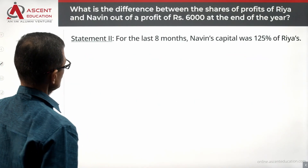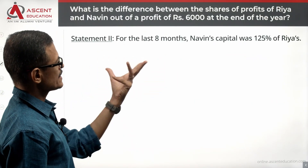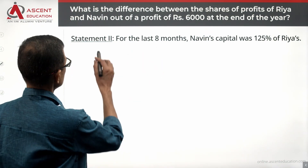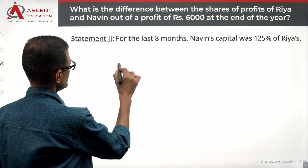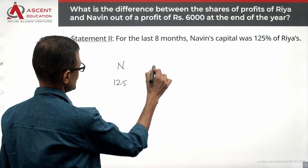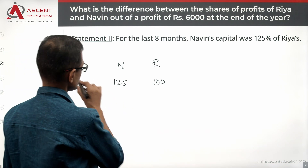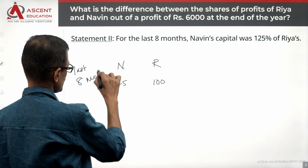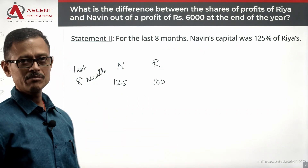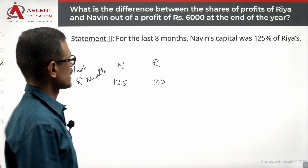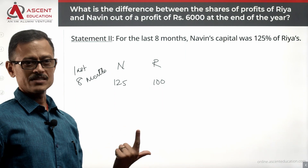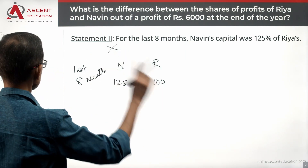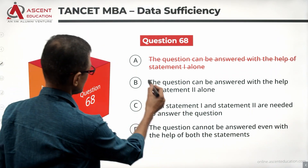Statement 2 says: for the last 8 months, Navi's capital was 125% of Rhea's. For the last 8 months, Navi is 125% and Rhea is 100%. But what about the first 4 months? We have no information about what happened during the first 4 months. So we cannot answer this — Statement 2 alone is also not sufficient. Rule out answer option B.